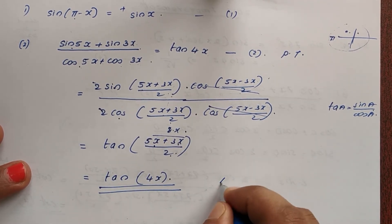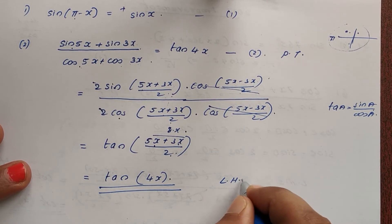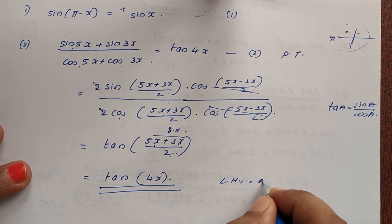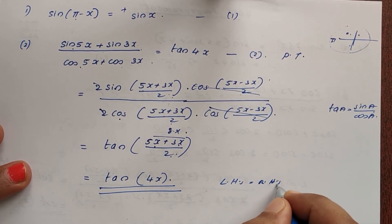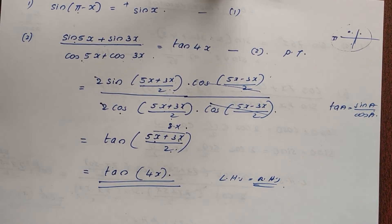That is tan(8x/2) = tan 4x. Hence it is proved.